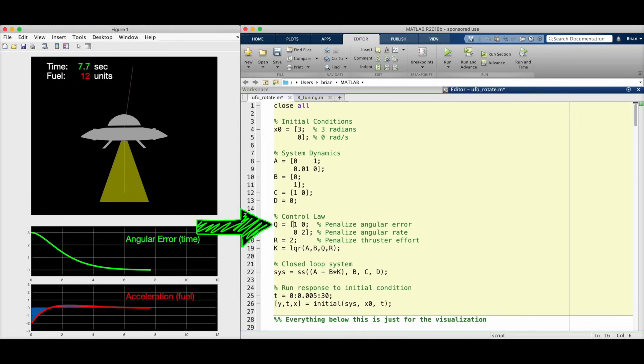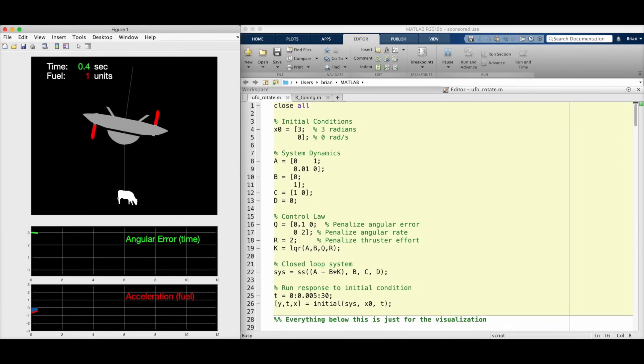Alright, enough of this small stuff. Let's really save fuel now by relaxing the angle error weight a bunch. Okay, this is going really slowly now, so let me speed up the video to just get through it. In the end, we used 5 units of fuel, less than half of what was used before.